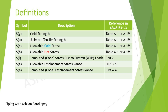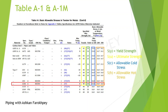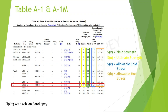Let's get deeper into the first four items: yield strength, ultimate strength, allowable cold, and allowable hot stresses. To do this, we need Table A1 of ASME B31.3. As can be seen here, ASTM 106 Grade A is highlighted in red. In addition to the unit numbers of the material and its P-number, which is used for knowing its welding specifications, some other data are also here.